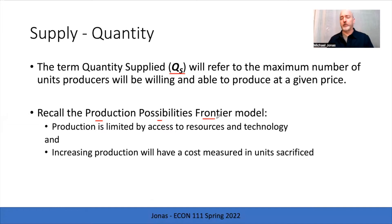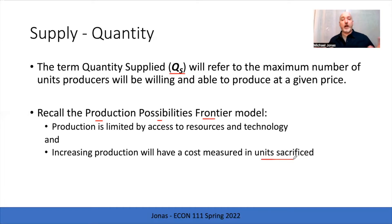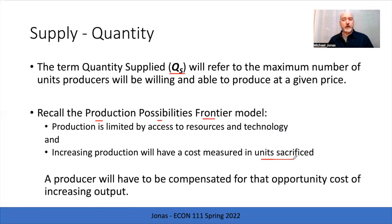The other takeaway from the production possibility frontier model is that as we move along that function, we noticed a downward sloping relationship between quantities in two competing sectors. If you ask a firm to produce more, there's a cost associated with that — measured in units sacrificed of the alternative good, the opportunity cost. What we're getting at is translating that opportunity cost into a dollar value — the price, the revenue received that will compensate for that cost. That's essentially the construction of this supply relationship.